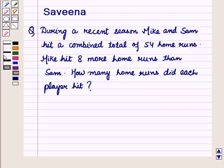Hello and welcome to the session. In this session we will discuss a question which says that during the recent season Mike and Sam hit a combined total of 54 home runs. Mike hit 8 more home runs than Sam. How many home runs did each player hit? Now let us start with the solution of the given question.